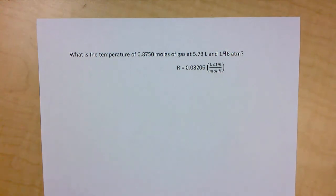Let's take a look at our question. What is the temperature of 0.8750 moles of gas at 5.73 liters and 1.48 atmospheres? And we are given R, the gas constant, is 0.08206. The unit is liters atmospheres over moles kelvins.